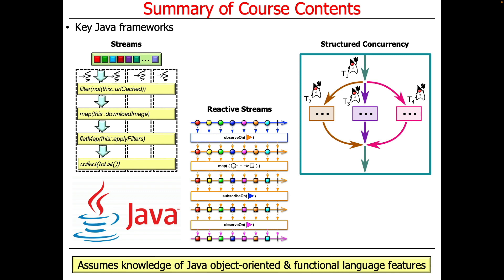Towards the middle to later part of the course, we're going to switch over to talking about something called Reactive Streams, which is a paradigm that's been around for maybe five or six years and has become quite popular in certain contexts, especially for building very scalable infrastructure for things like cloud computing environments.